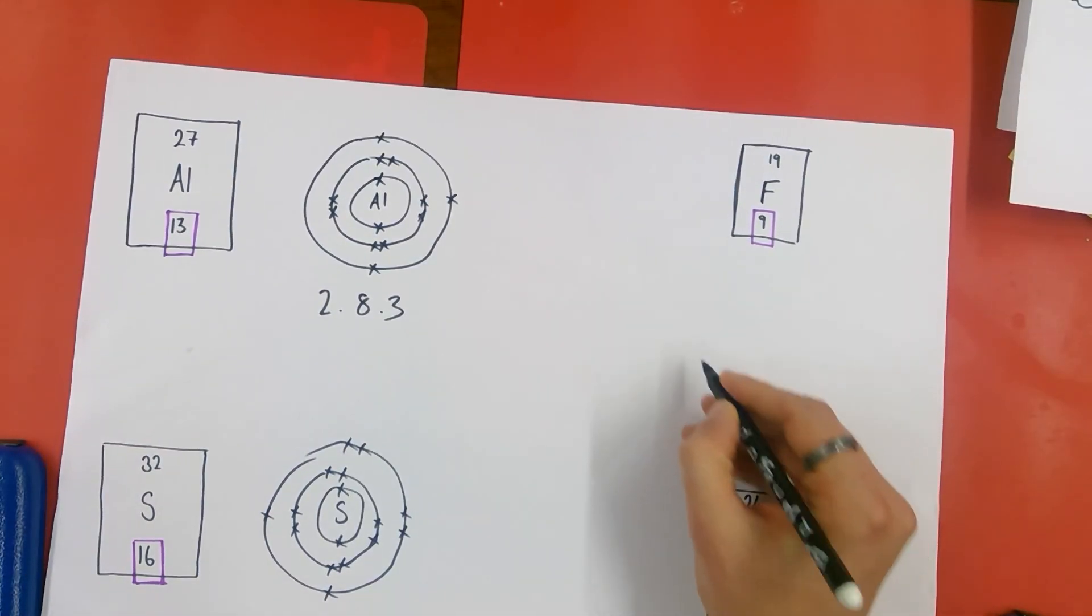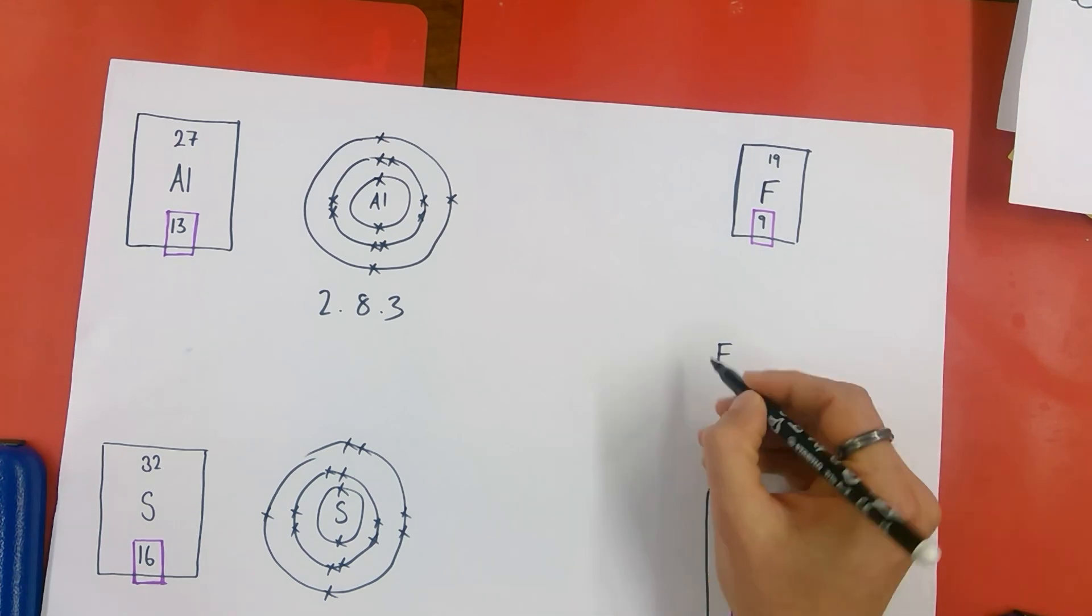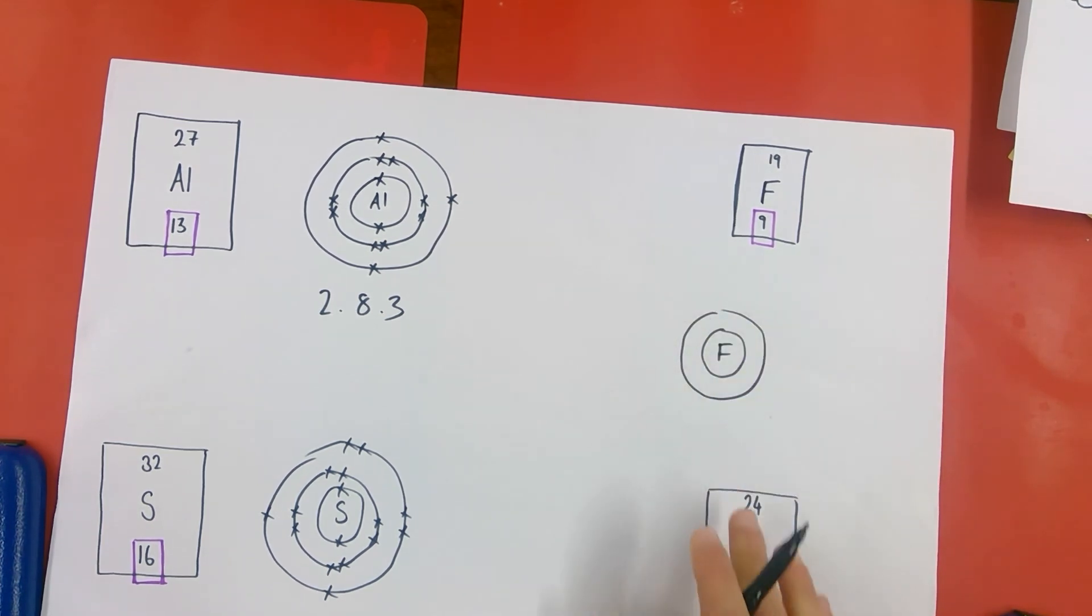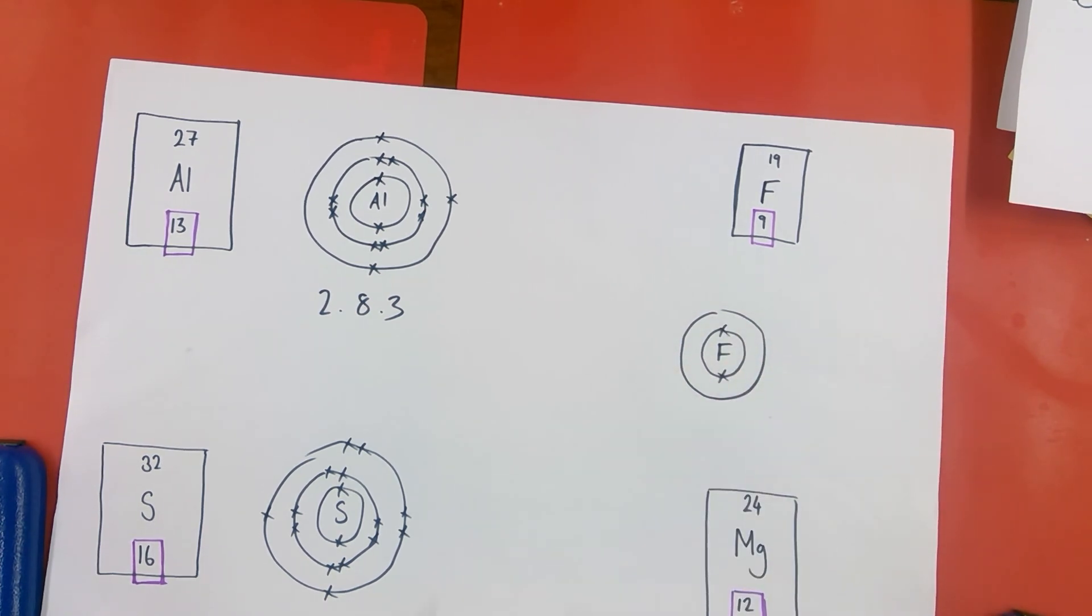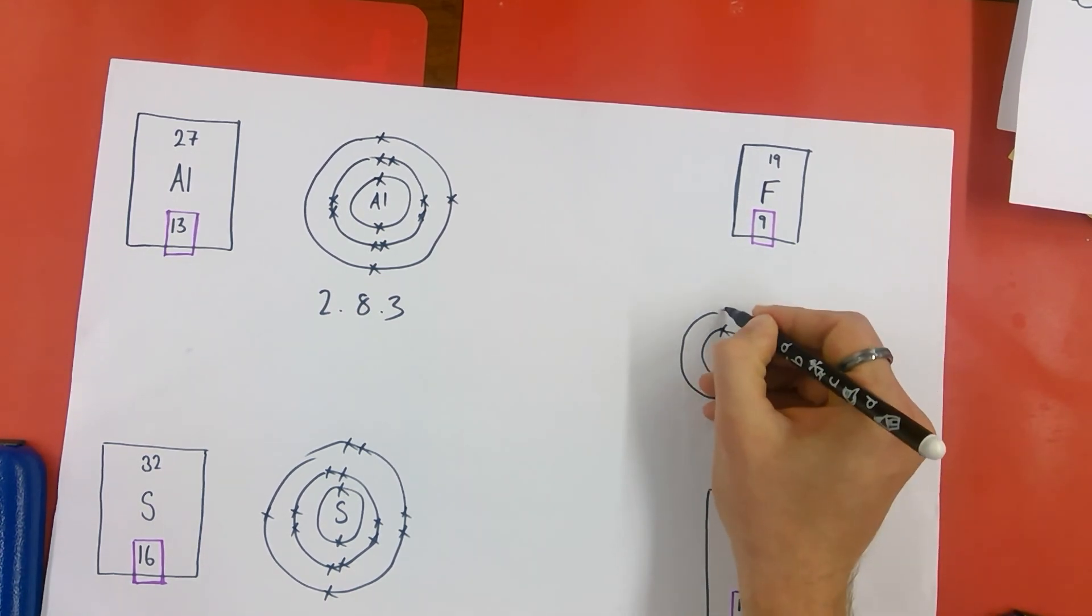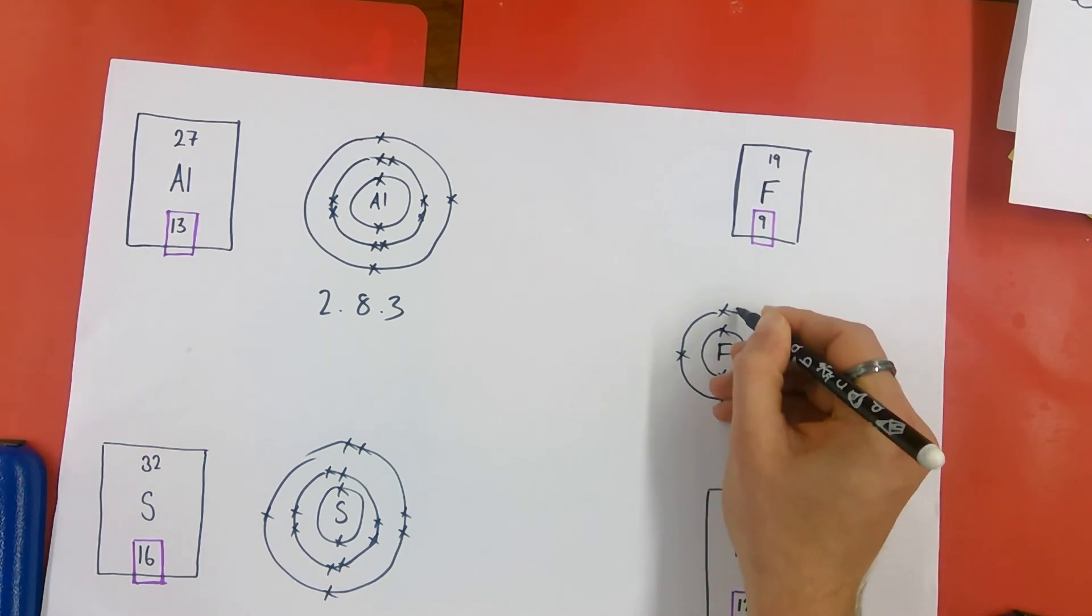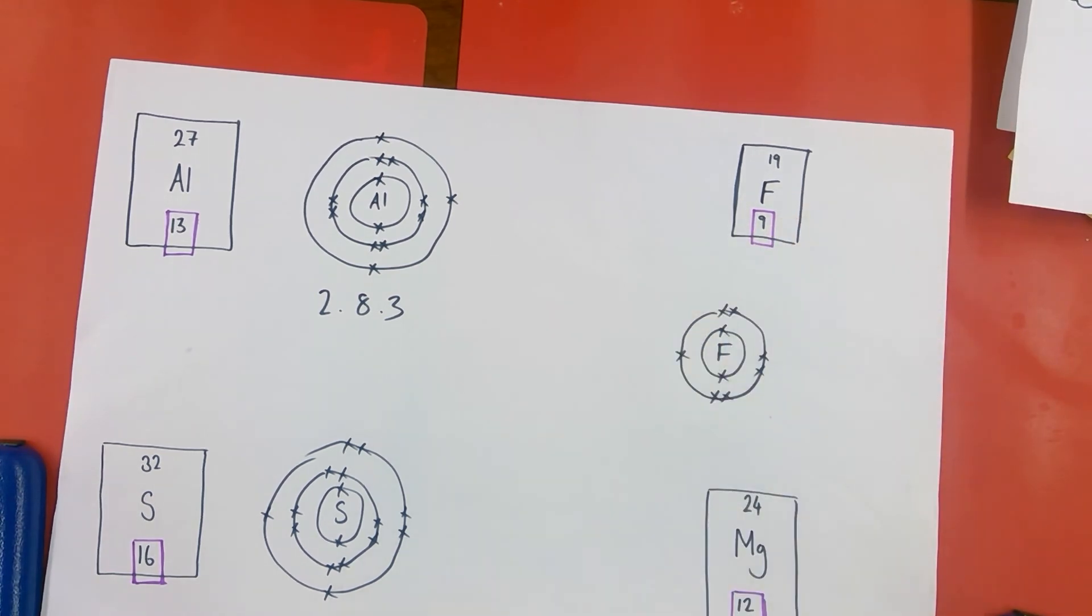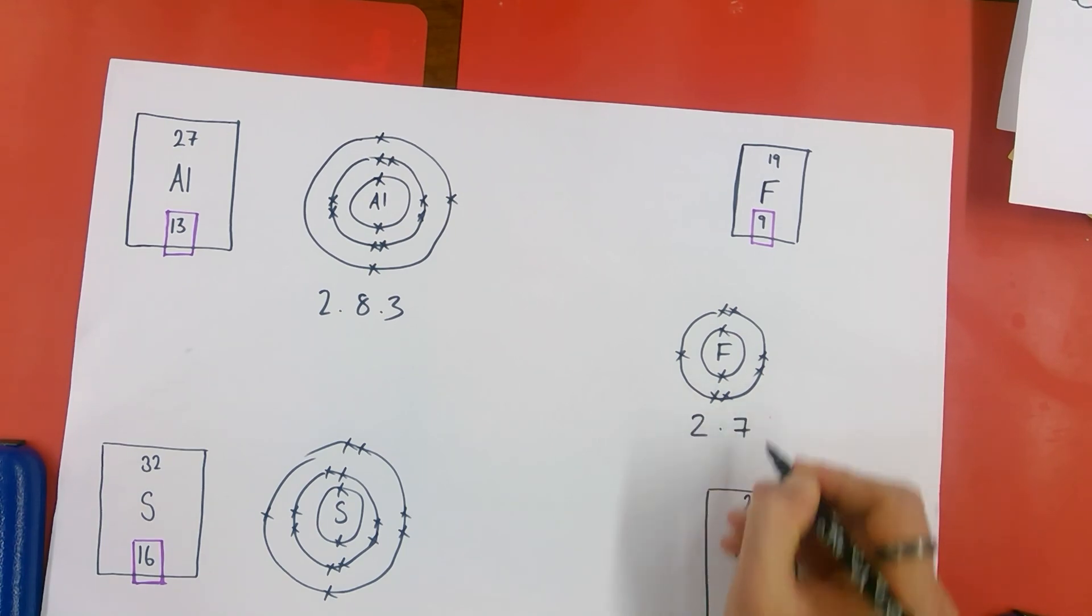Fluorine comes next. Same as before. F represents the nucleus of the fluorine atom. I'm only going to draw 2 shells this time, because I don't need to draw 3, because I've only got 9 electrons to play with. 1, 2 in the first shell. Then, 3, 4, 5, 6, 7, 8, 9. I've used up all the electrons. I only had 9 to play with. 2, 7 is the electron configuration of the fluorine atom.